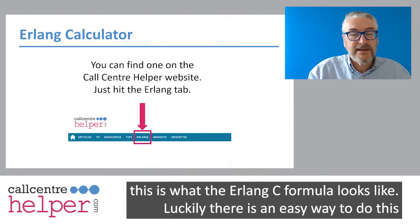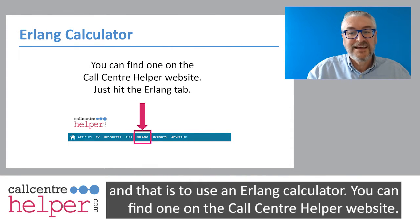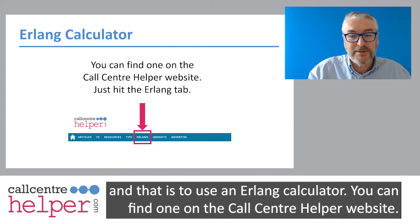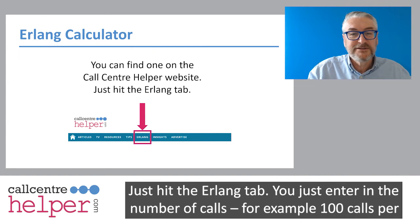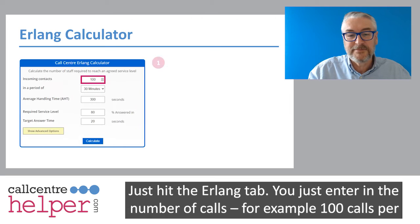Luckily, there is an easy way to do this, and that is to use an Erlang calculator. You can find one on the Call Centre Helper website — just hit the Erlang tab.